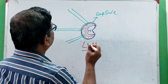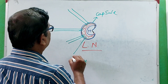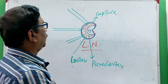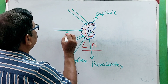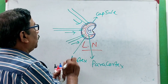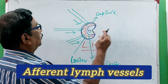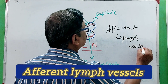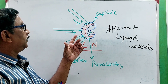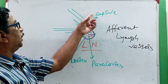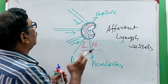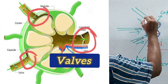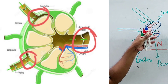All these lymph vessels enter into the lymph node through the capsule and into the substance of the lymph node on the outer side. This outer part is called the cortex. Inner to the cortex is the paracortex, and the innermost part is the medulla — all things you have learned from histology class. The lymph vessels passing through the capsule into the lymph node are called afferent lymph vessels.